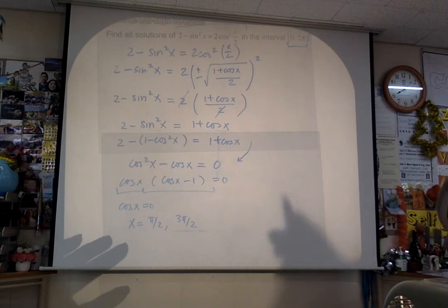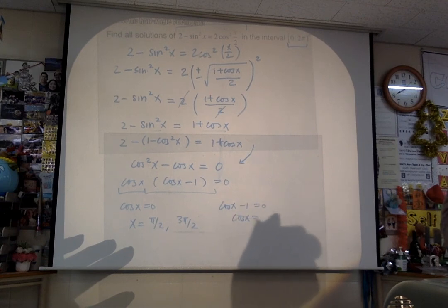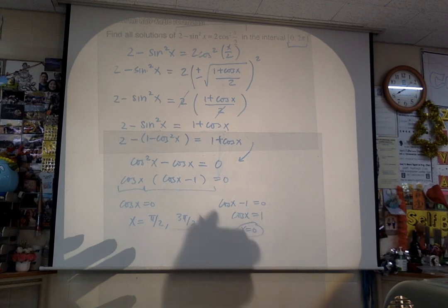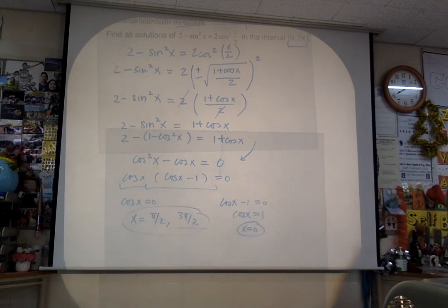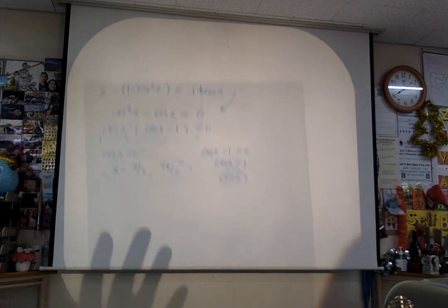If you don't understand the algebra, ask the most trustworthy person for help. Factor it out: cosine x times (cosine x minus 1) equals 0. Solve each factor individually. Cosine x equals 0 gives x equals π/2 and 3π/2. Cosine x minus 1 equals 0 gives cosine x equals 1, so x equals 0. These are all the solutions in the interval 0 to 2π — no extraneous solutions. Please move on to the next part when you're ready.